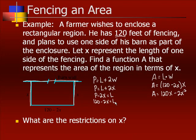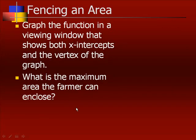Now what are the restrictions on X? X cannot be negative because we cannot have a negative width. And we know that X cannot be above 120 because then that would use all of our fencing.